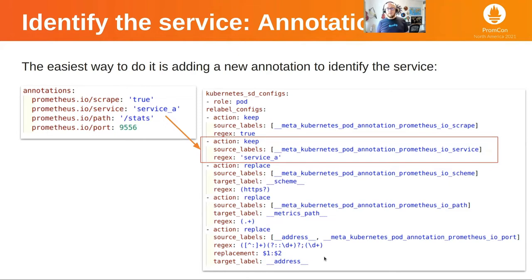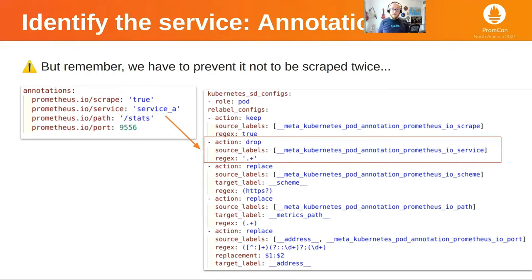After this, we can add the drop labels, metrics, relabeling — whatever we need. Also, remember that you have to remove these pods from the generic job, because otherwise they will be scraped more than once. How do we do that? Here we added a new rule that says drop all the pods that have the annotation not empty.